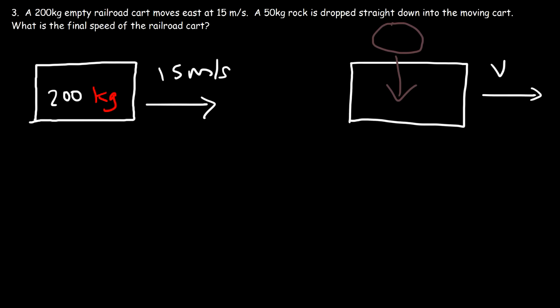p-initial must equal p-final. The initial momentum is mass times velocity: 200 times 15, which is 3000. That should equal the final momentum, m·v. The new mass is no longer 200; it's the 200 kg cart plus the 50 kg rock, giving a total of 250 kg. So the new speed is 3000 divided by 250, and the railroad cart with the rock moves at a combined speed of 12 meters per second.